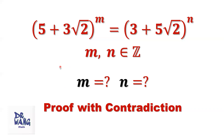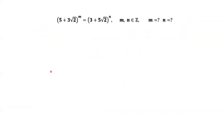In this video, we are going to discuss a method called proof by contradiction to solve this question. From the given condition, we can see that both 5 + 3√2 and 3 + 5√2 are irrational numbers.